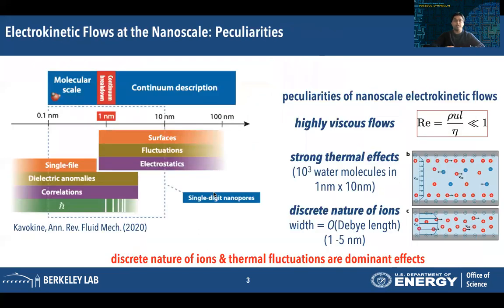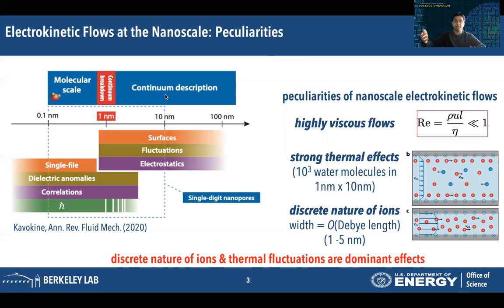Beyond their important technological applications, electrokinetic flows at nanoscales are also peculiar from a fundamental physics point of view. The scales that we are interested in, from one to tens of nanometers, are much larger than the molecular scale, so quantum effects can be ignored. But these scales are still much lower than the scales at which a continuum description of these materials is valid. In fact, there are three peculiarities of nanoscale electrokinetic flows that make them special and also difficult to simulate on a computer.